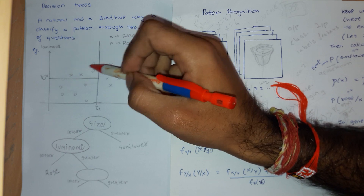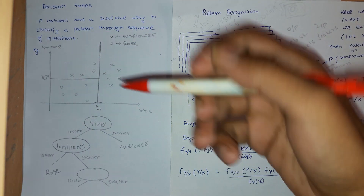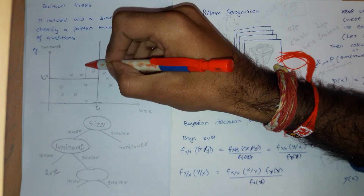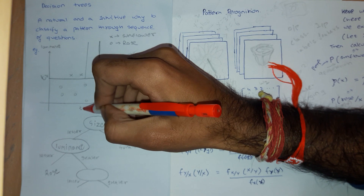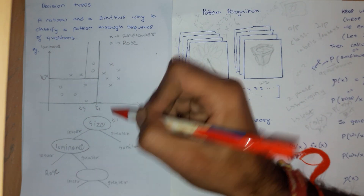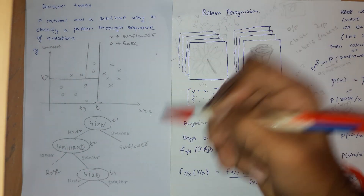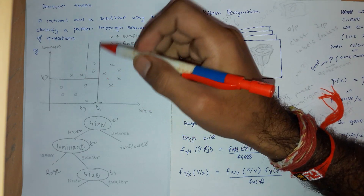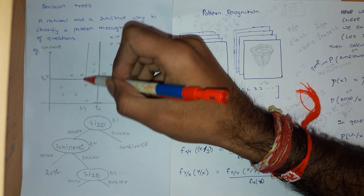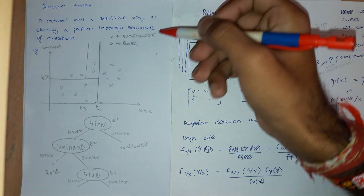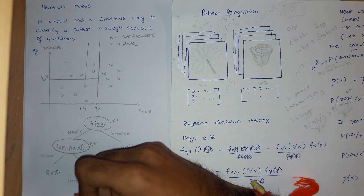If samples are greater than T2, there are two samples remaining, so I need to do something else. If I take size again with a new threshold T3, I can now perfectly distinguish both samples. If it is greater than T3 I say it is a rose; if it is less than T3 I say it is a sunflower.